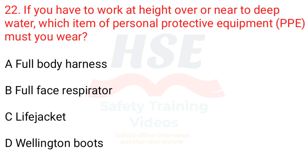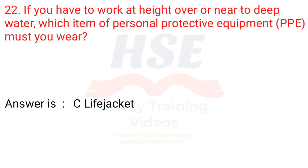Question 22: If you have to work at height over or near to deep water, which item of personal protective equipment must you wear? A. A full body harness. B. Full face respirator. C. Life jacket. D. Wellington boots. Answer is C. Life jacket.